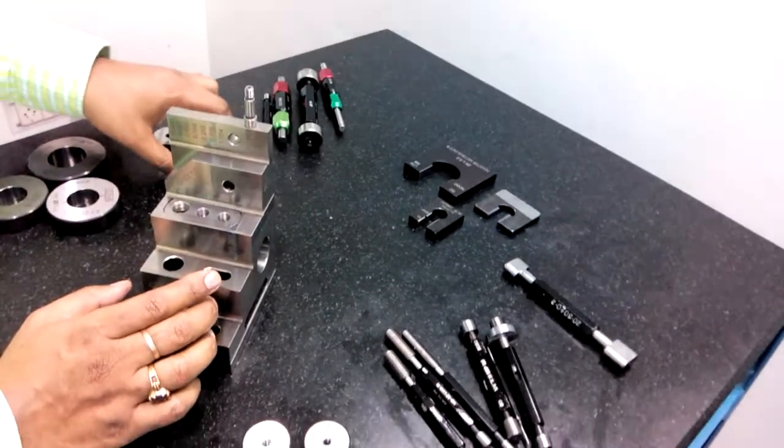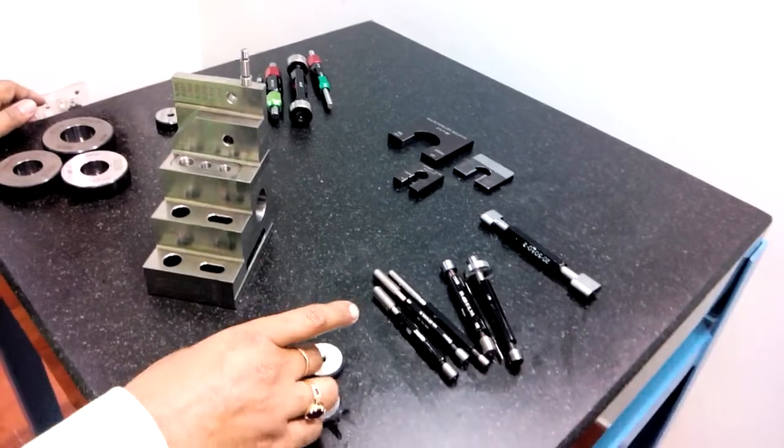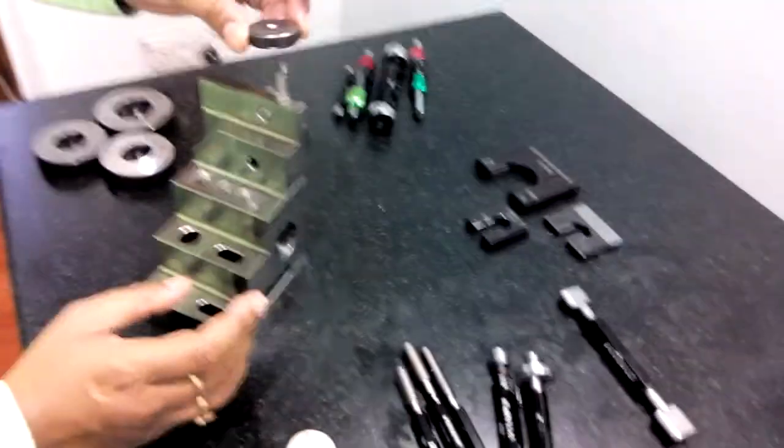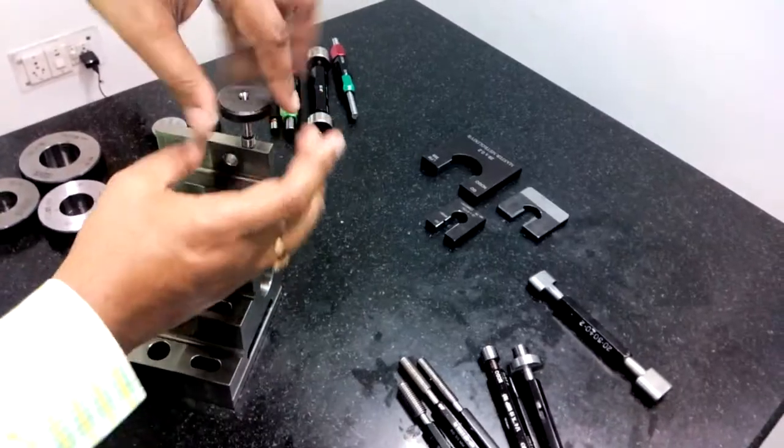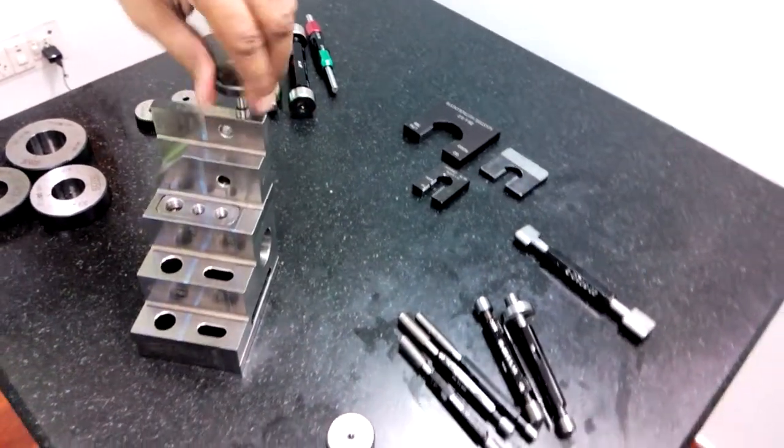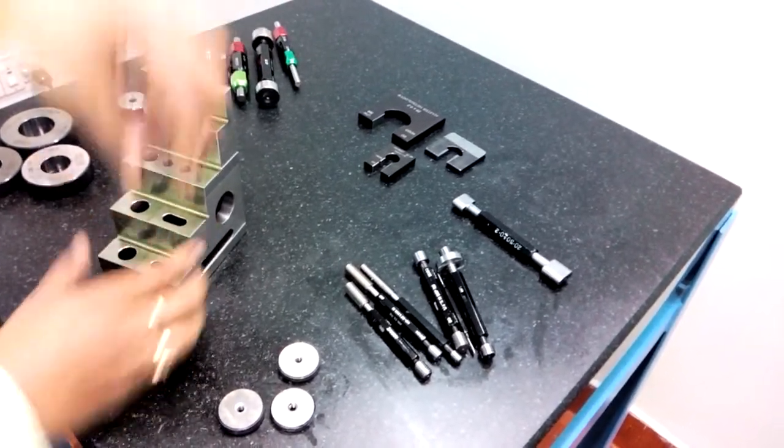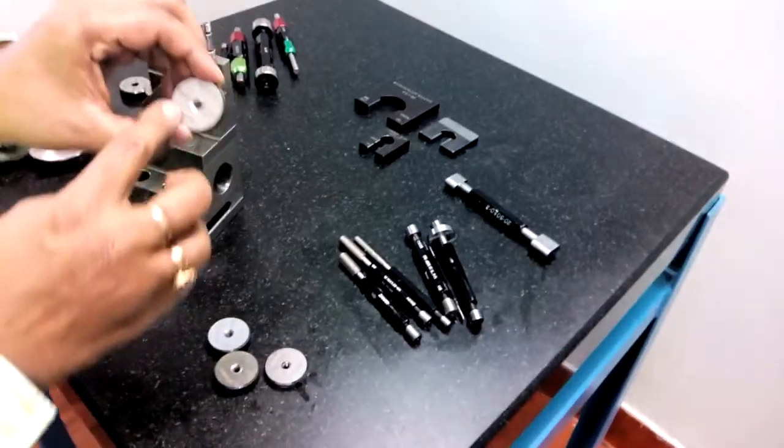Similar way, this is go thread ring gauge. This should qualify and this is qualifying with the thread. Now I will apply no-go and you see this is not qualifying.